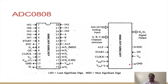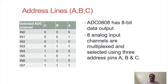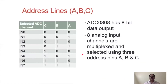Here we can see in the table how the ABC inputs are used for channel selection. From 000 to 111, one of the channels IN0 to IN7 is selected. For example, if the status of ABC is 101, then channel number five will be selected. So eight analog input channels are multiplexed and selected using the three address pins A, B, and C.